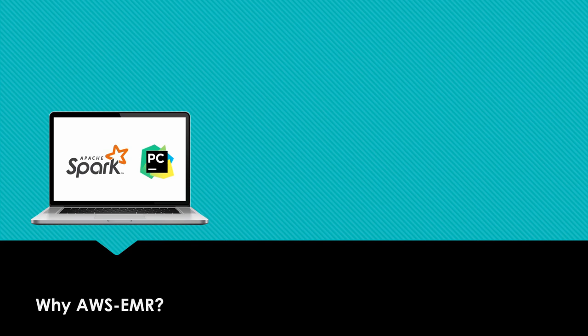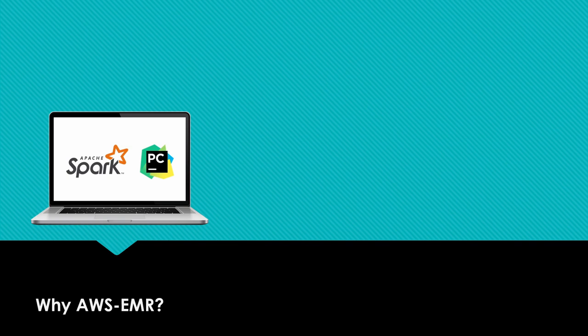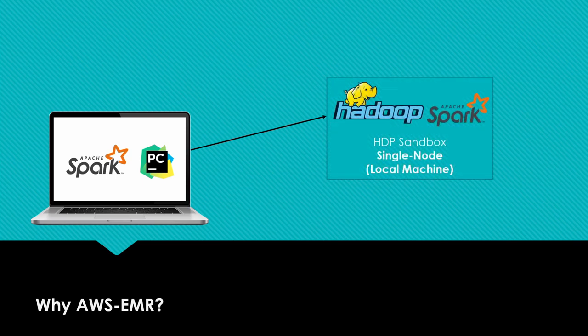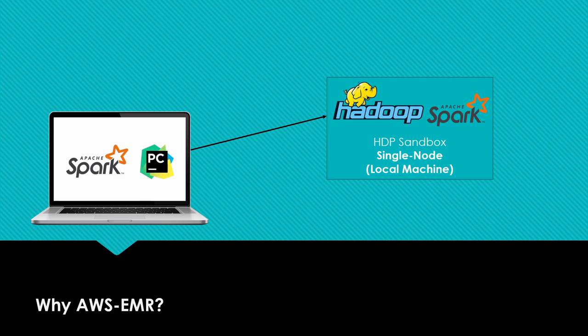Let us first discuss what AWS has to offer for our project and where AWS fits into the end-to-end pipeline we are building. Currently, we are developing code using Apache Spark on our local machines, with tools like Apache Spark and PyCharm installed locally. After developing the code, we have set up an external HDP sandbox — a single-node Hadoop cluster — which has all the important tools like Hadoop, Spark, Hive, and HBase already installed. This sandbox is running on a virtual machine inside our local machine, providing a complete Hadoop and Spark setup without manual configuration.